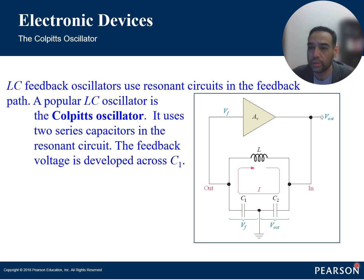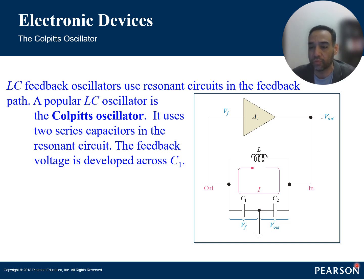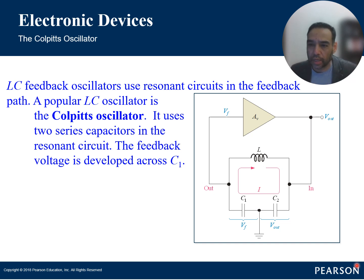The oscillation frequency of a Colpitts oscillator is determined by the values of C1, C2, and the inductor in the tank circuit. You can adjust C1, C2, or L to tune the oscillator to any frequency within the operating limits of the op-amp. Op-amps do not have infinite bandwidth practically, so that limits the range.